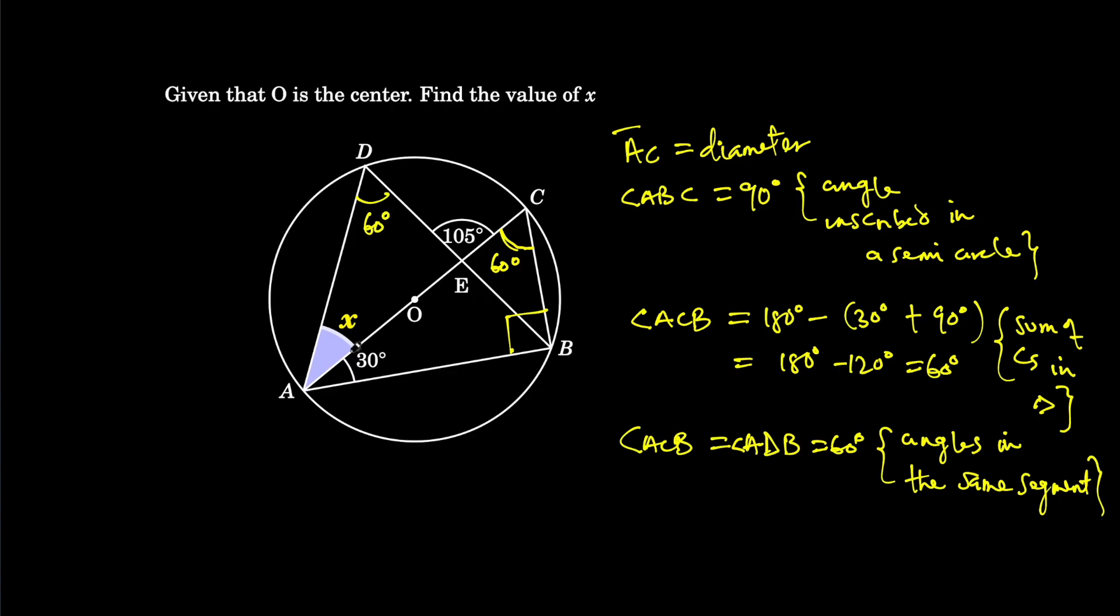Now to find x, it is known that the exterior angle of a triangle is equal to the sum of the two interior opposite angles.